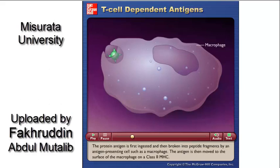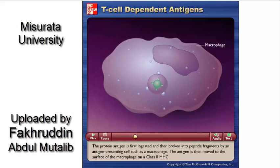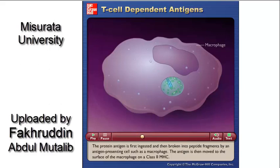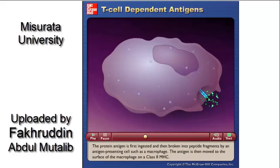The protein antigen is first ingested and then broken into peptide fragments by an antigen-presenting cell, such as a macrophage. The antigen is then moved to the surface of the macrophage on a class II MHC.